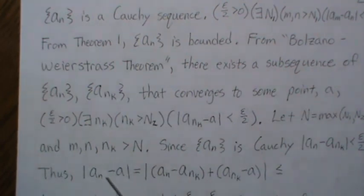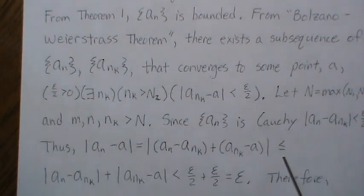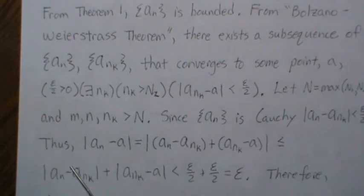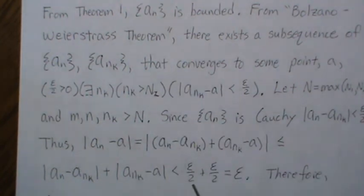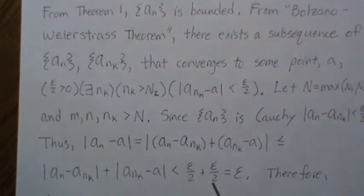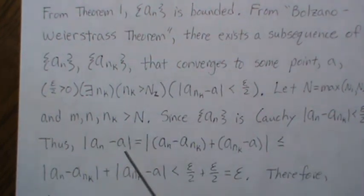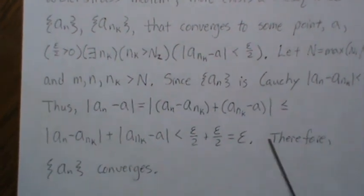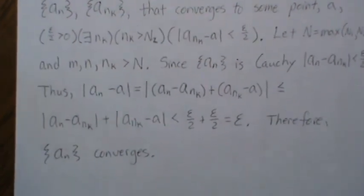Thus, if we look at A_n minus A, and then we add 0, so add and subtract the same quantity, then based upon the absolute value properties, that's less than the sum of these two absolute values. But since it's Cauchy, we know that's less than epsilon over 2. And since the subsequence converges, we know that that's less than or equal to epsilon over 2, which equals epsilon. So the sequence, the original sequence converges. And therefore, the series converges and we're finished.